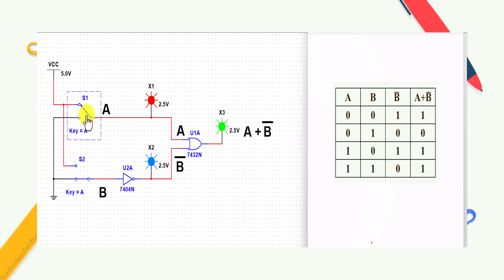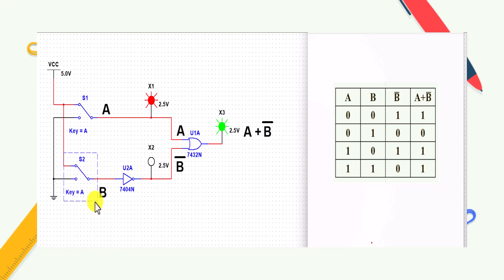Next condition: A=1, B=0 - switch S1 on, S2 off. A=1, B̄=1, output is 1. Next condition: A=1, B=1 - both switches S1 and S2 on. A=1, B̄=0, A+B̄=1, output is 1. Hence the two-variable arbitrary function is verified using the combinational circuit.